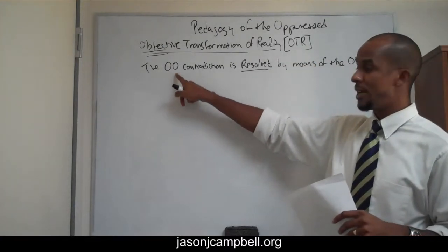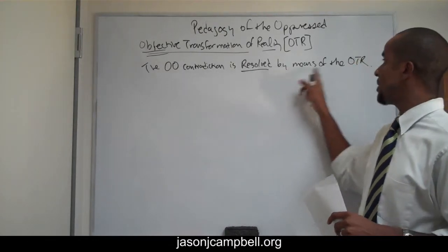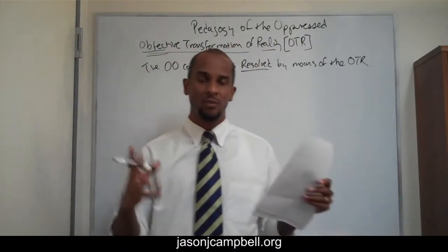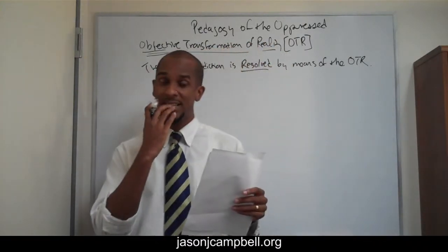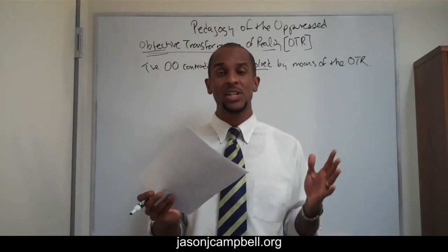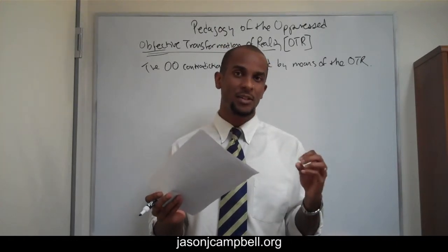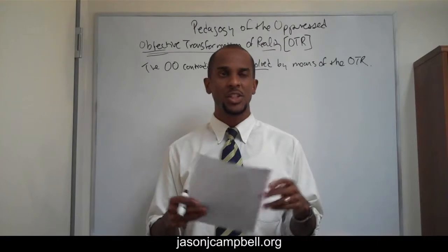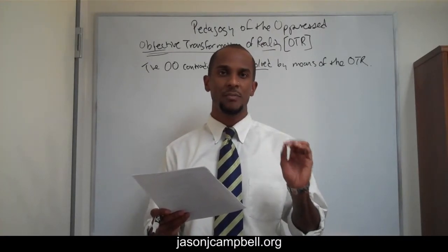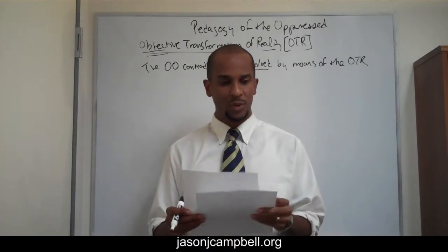The oppressor-oppressed contradiction, which we saw before, is resolved by means of the objective transformation of reality. What in the world does that mean? Of all the things in Freire, and we're only a couple of pages into chapter one, I would argue that this is one of the hardest things to understand.